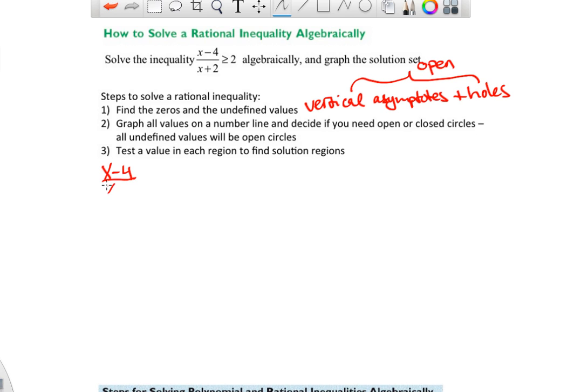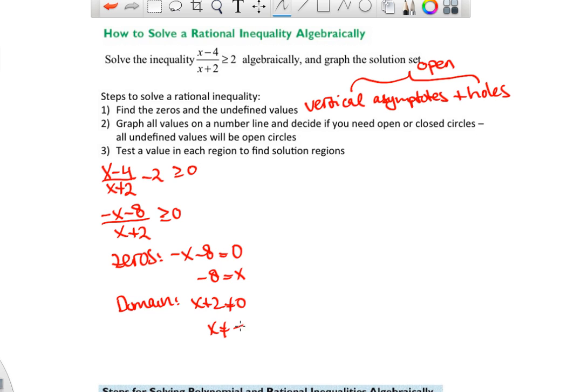So it would have started exactly the same way. You would have brought this over here first, made a common denominator, and ended up with this one. And then you would have just looked for zeros. So we're actually only interested in the x-intercept. And we would have to look for problems with the domain. So based on the domain, we would say x plus 2 cannot equal 0, so x cannot equal negative 2. And then those would be the two locations on my number line, so negative 8 and then negative 2.